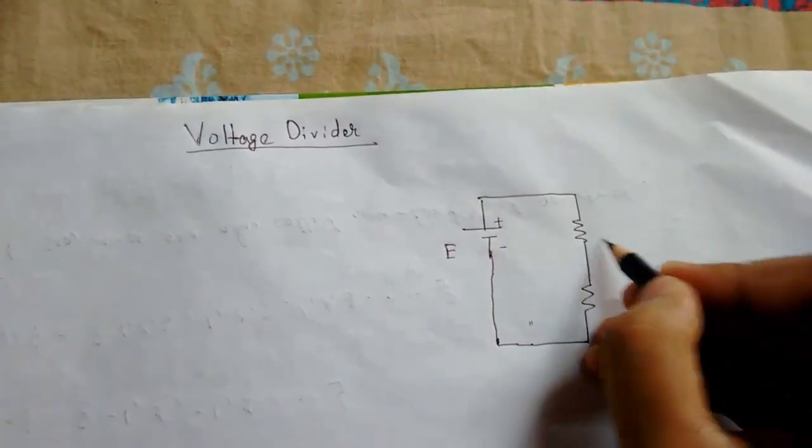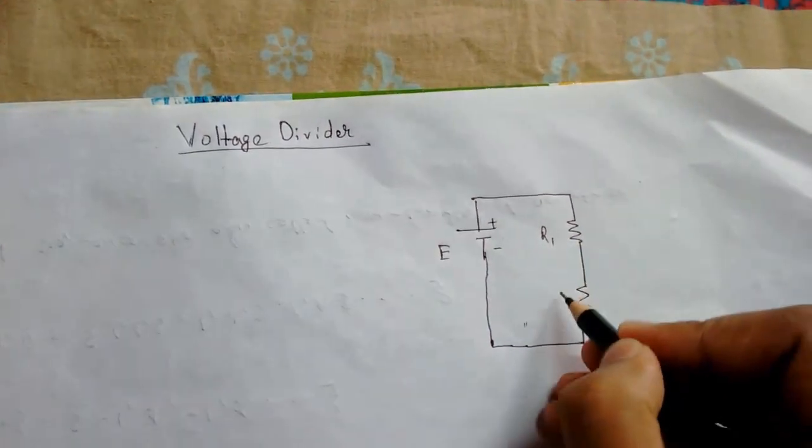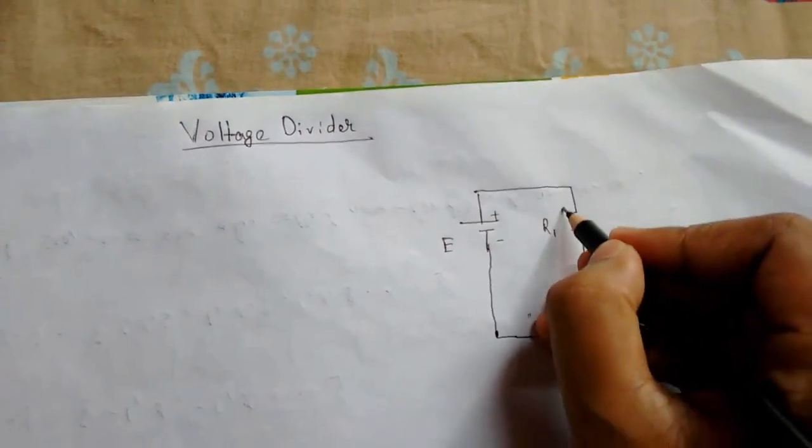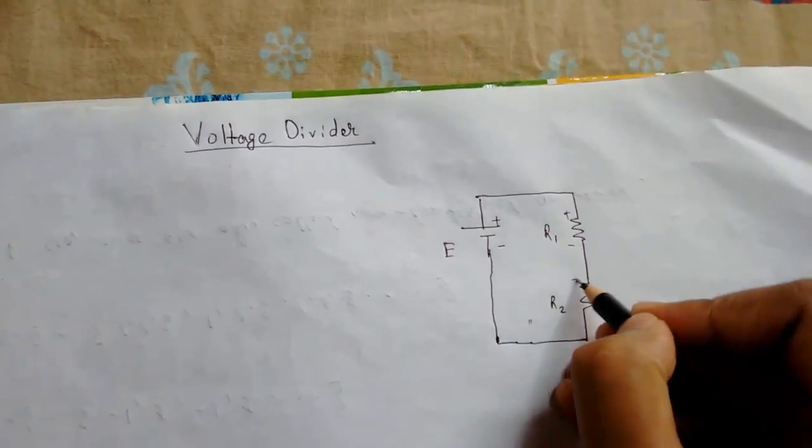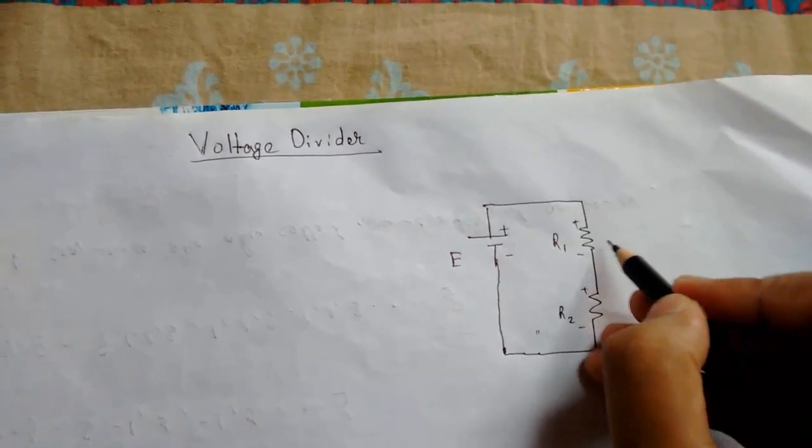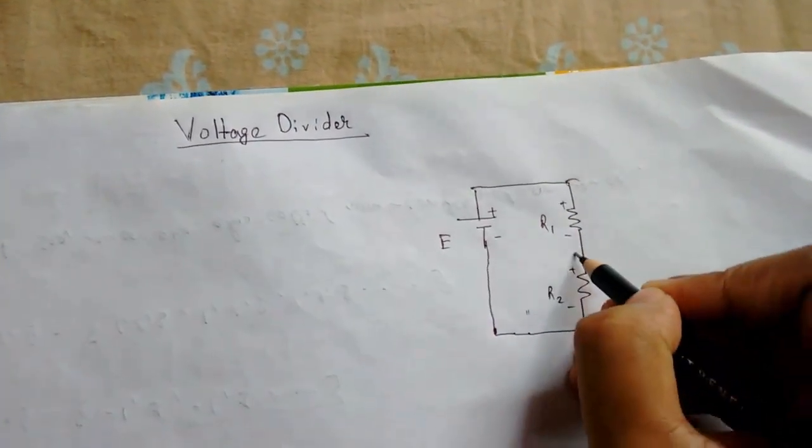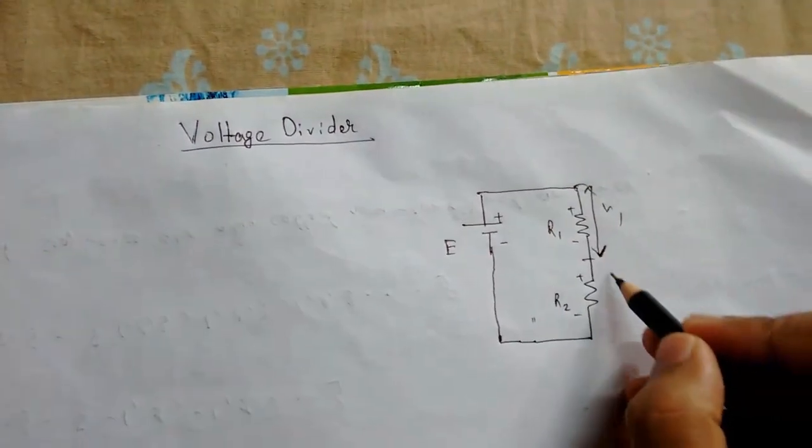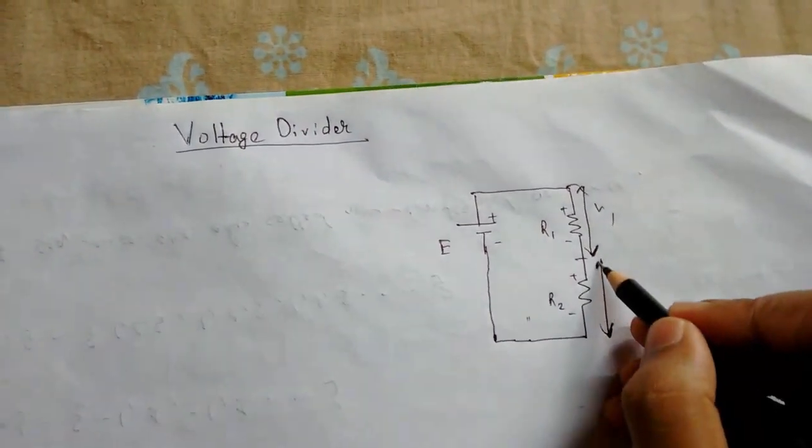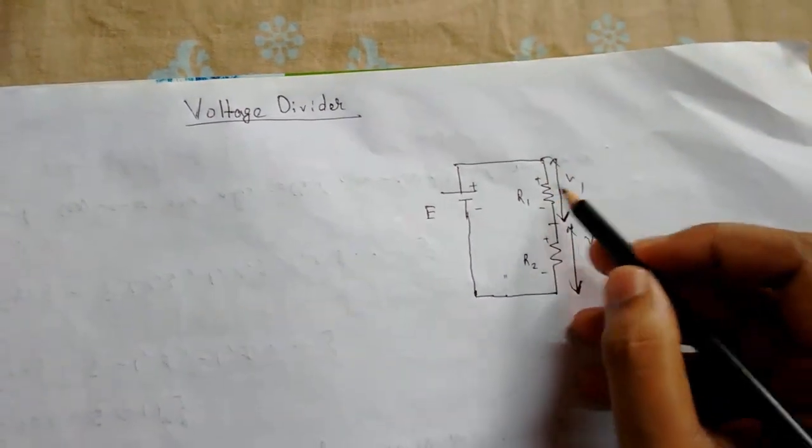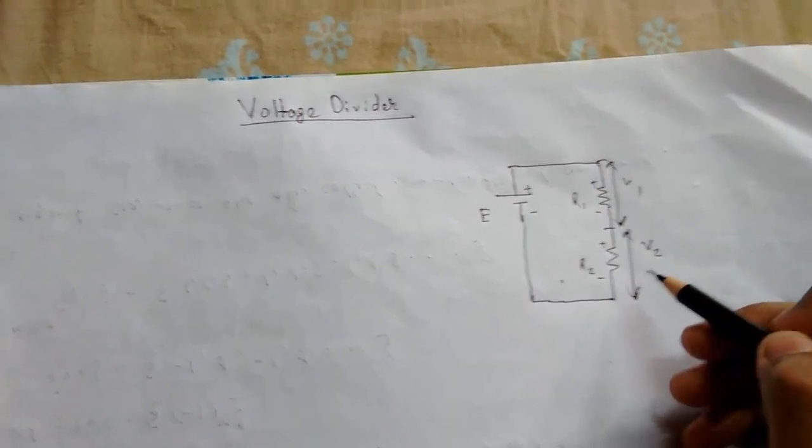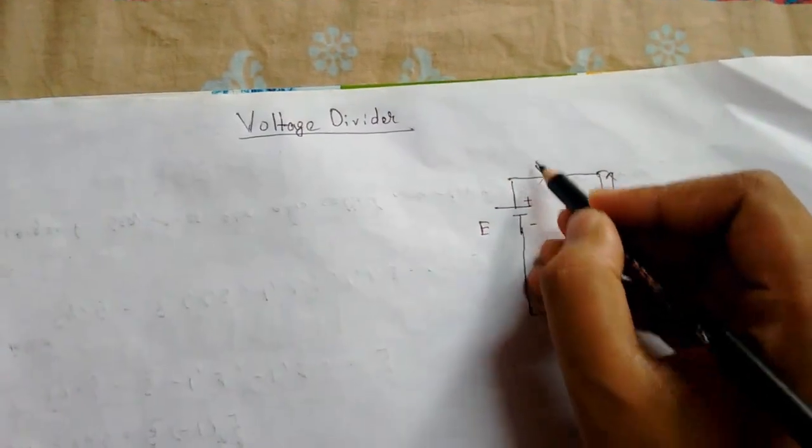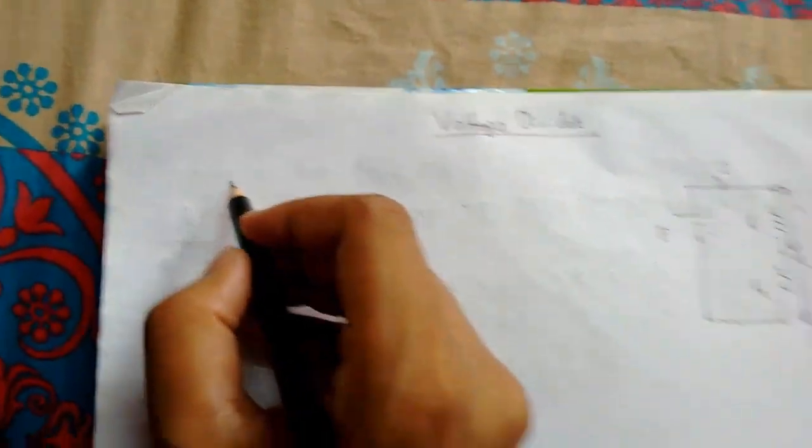This will be positive terminal and negative terminal. This is R1, this is R2, positive, negative. This part is V1 and this part is V2. Current passing through R1 is V1 and current passing through R2 is V2. We know current is passing through as I.